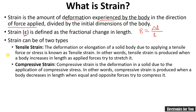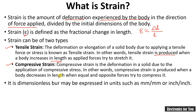Strain can be of two types. One is known as tensile strain and another one is compressive strain. Tensile strain is when force applied on the body increases the length — if you stretch the body and its length increases, that force is known as tensile strain. And if force is applied on the body to compress it, that is to reduce its length, then such a strain is known as compressive strain. There is no dimension of strain, but it may be expressed in terms of millimeter per millimeter or inch per inch.